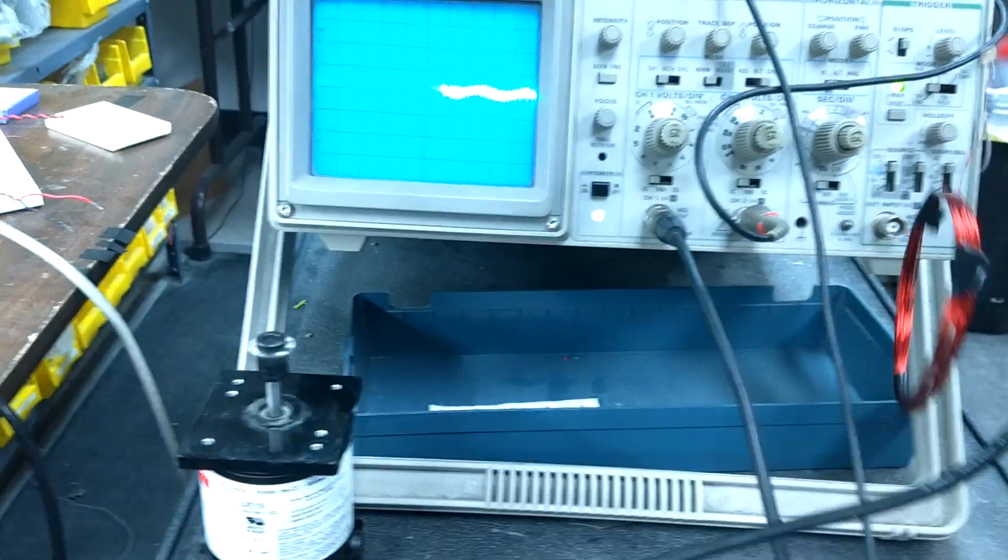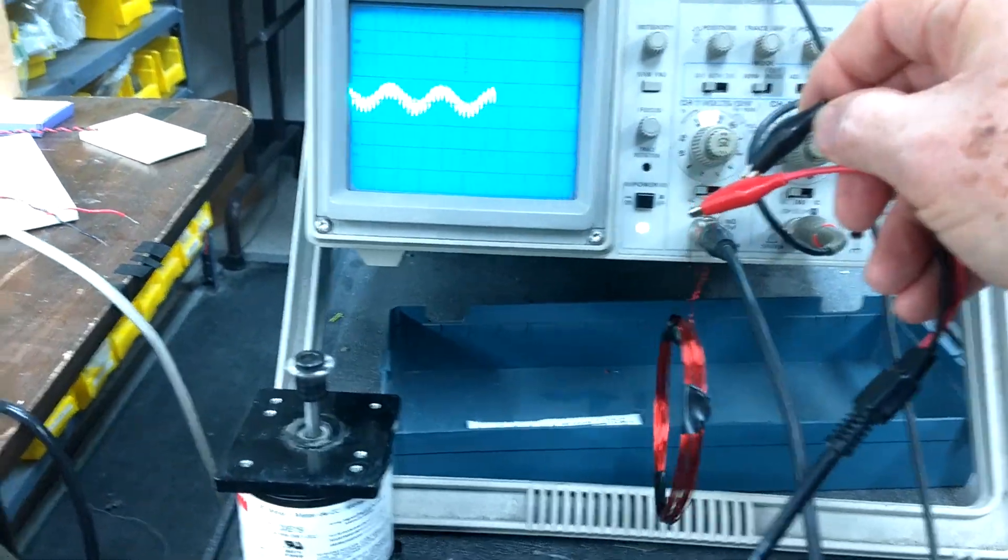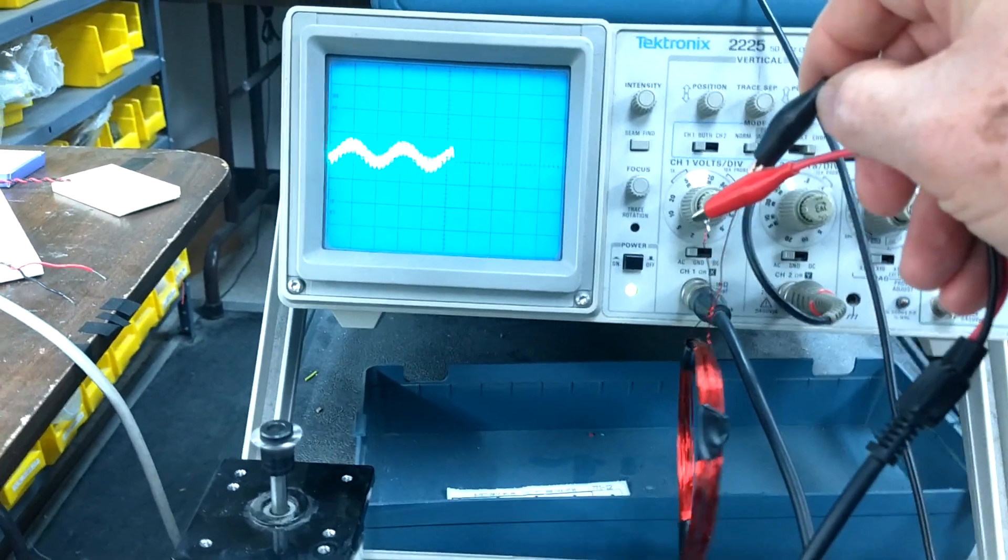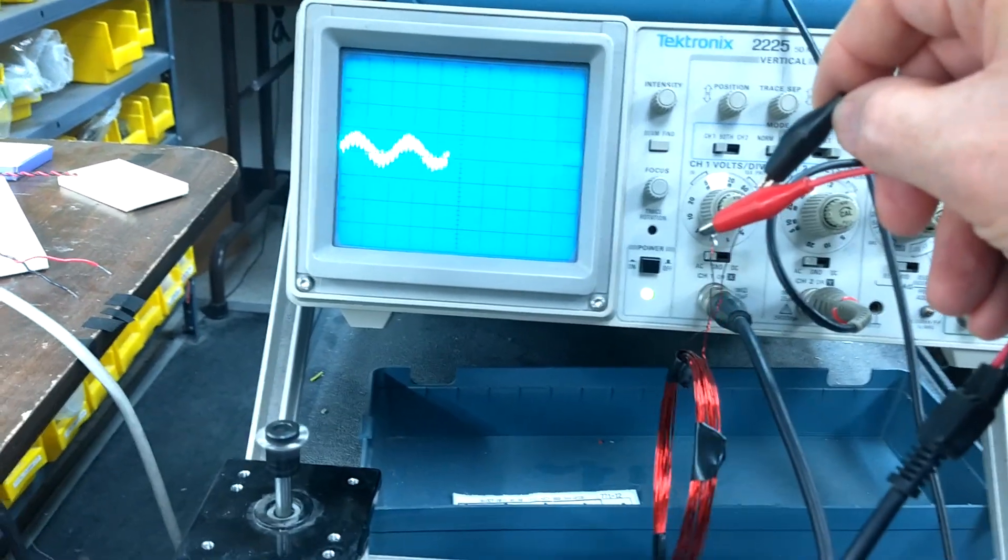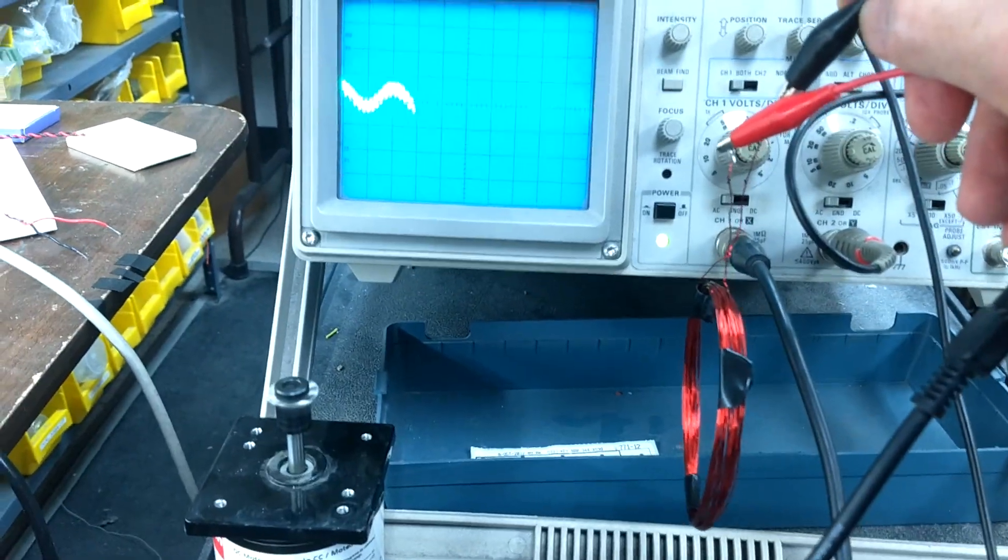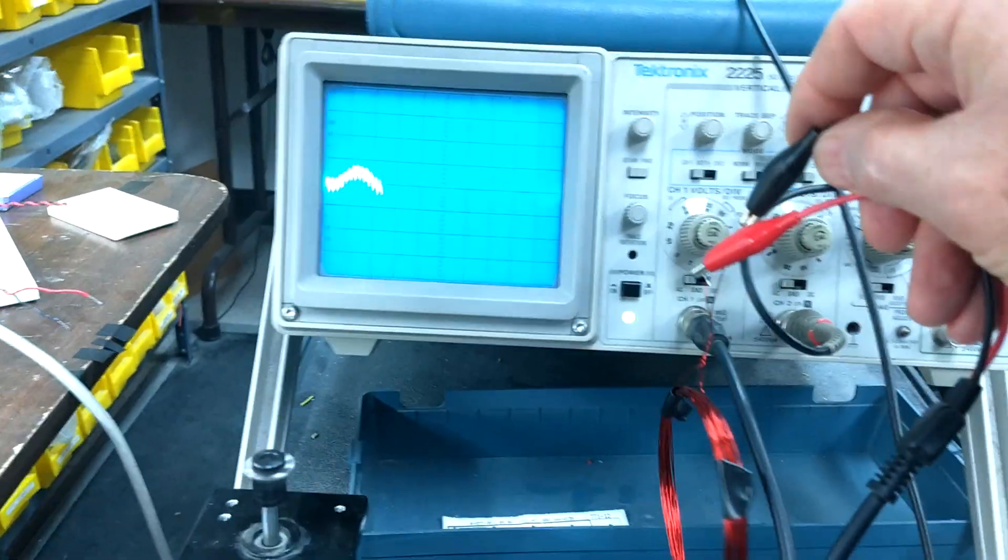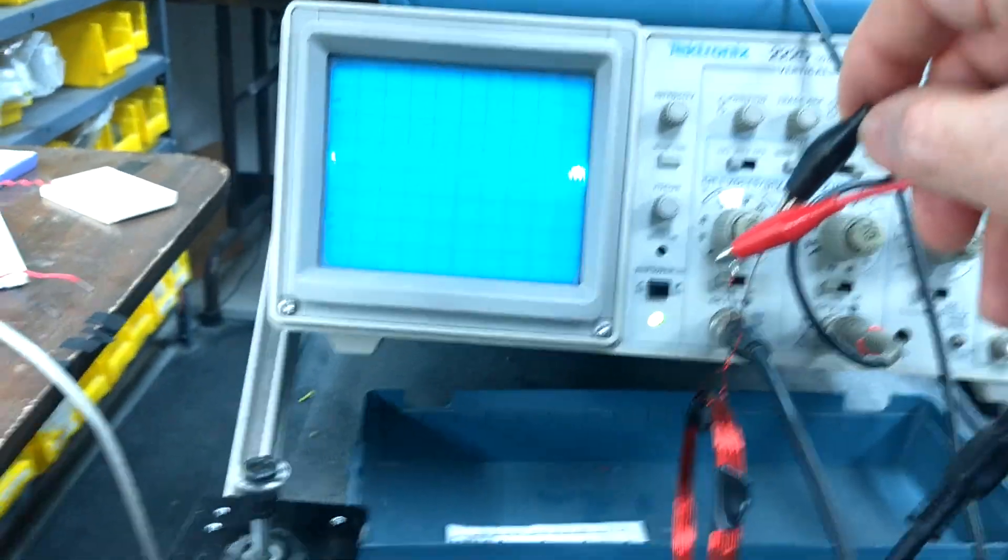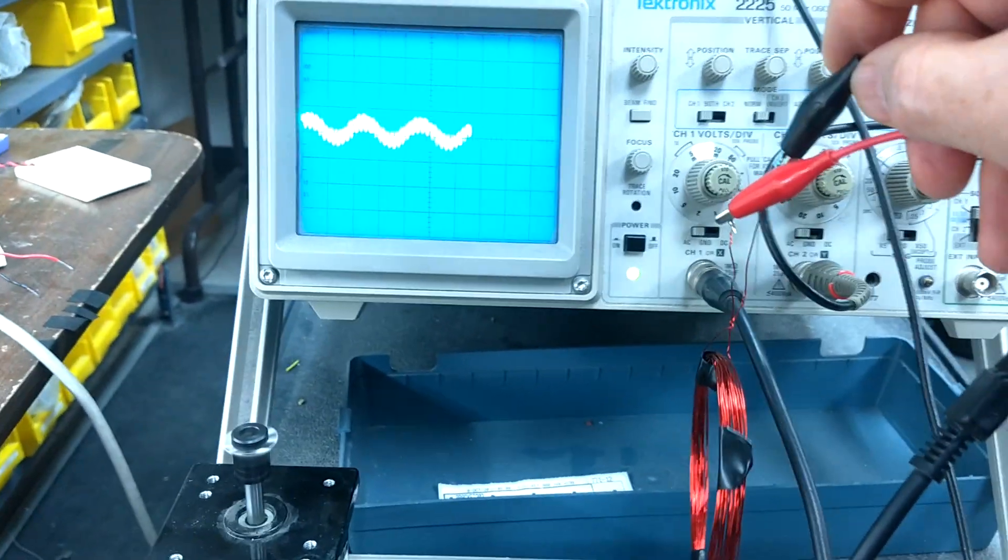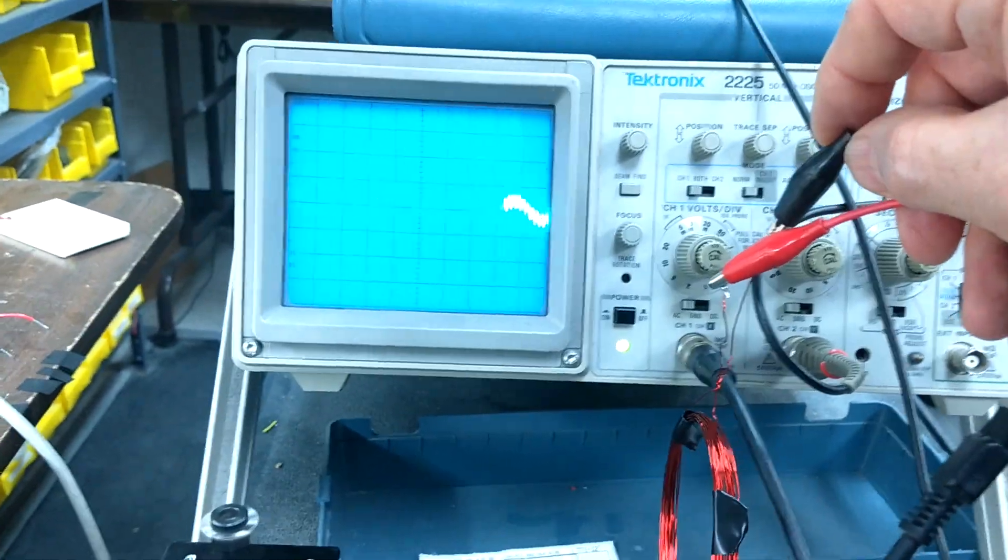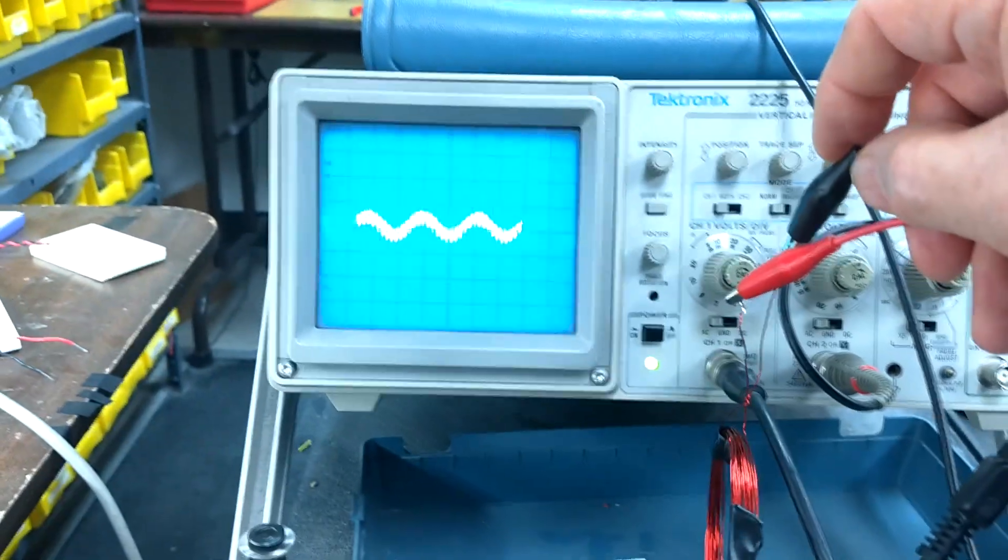So you can see the size of the coil makes a big difference when picking up the field, because there's more field going through the turns, sort of like a telescope. The bigger the telescope, the more light it gathers. So here, the bigger the coil, the more flux goes through it.